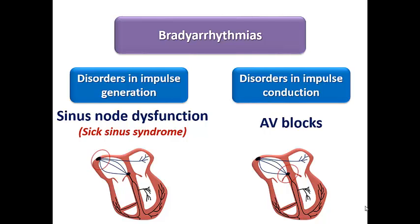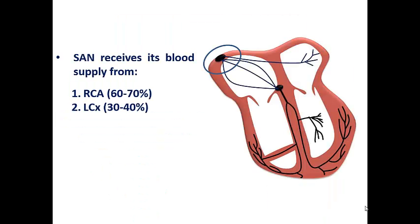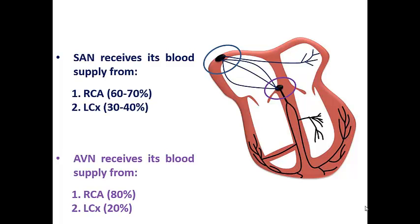Bradyarrhythmias are classified into two types: disorders in impulse generation — which are sinus node dysfunction — and disorders in impulse conduction related to AV blocks. The SA node receives its blood supply from the RCA in 60–70% of the population and from the LCX in 30–40%. The AV node receives its supply from the RCA in about 80% of individuals and from the LCX in 20%. Occlusion of these vessels in myocardial infarction can affect SA or AV node function.